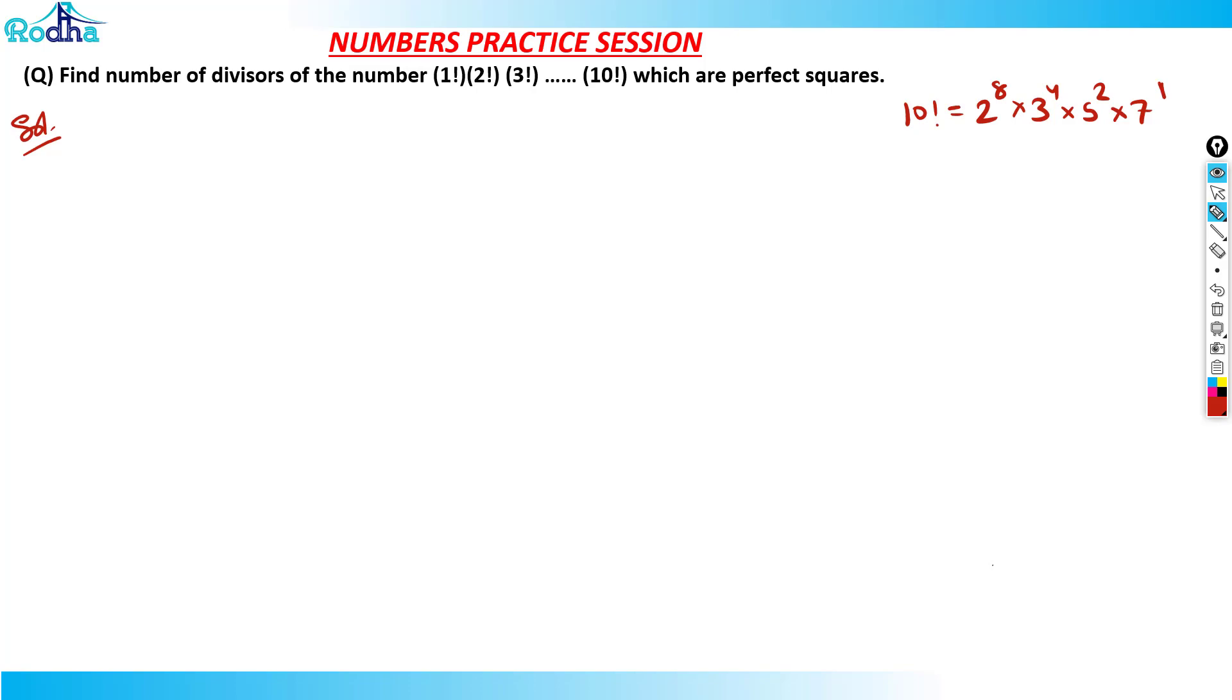It contains 2 to the 8, 3 to the 4, 5 to the 2, and 7 to the 1. Correct. You should just remember this actually. It is used a lot of times in approximations and factorial equations also. So remember it, right.